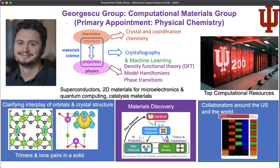A big direction in my research is clarifying the interplay of orbitals and crystal structure, particularly unique forms of orbital symmetry. Here I'm showing some materials that have trimers, and also some lone pairs in a solid, which are quite well known in molecules but not in solids. We also work on materials discovery using machine learning. I have collaborators around the US and the world, including at IU, Duke, Johns Hopkins, UCSB, Geneva, and Vienna. This is a paper with collaborators from Geneva in Nature Materials.